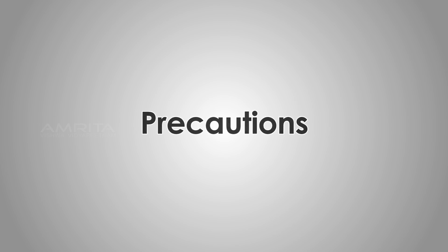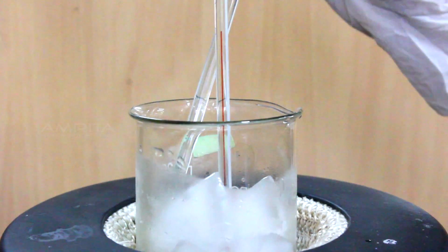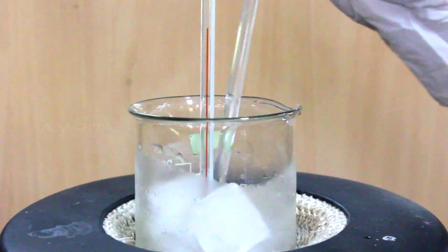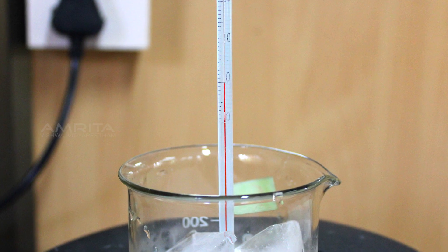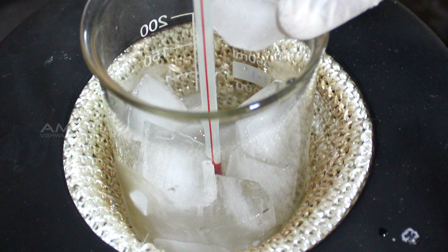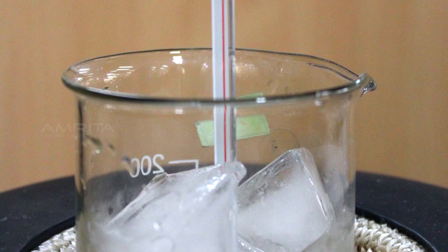Precautions: Ice cubes should be stirred continuously to maintain a uniform temperature throughout the experiment. The bulb of the thermometer should be kept surrounded with ice cubes.